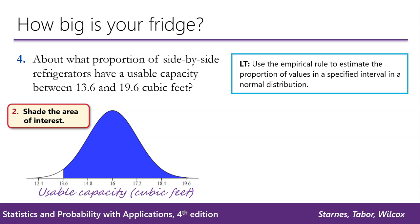Next, we shade the area of interest. We want to know what proportion of side-by-side refrigerators have a usable capacity between 13.6 cubic feet and 19.6 cubic feet.